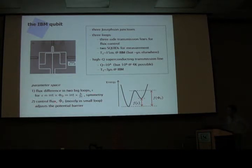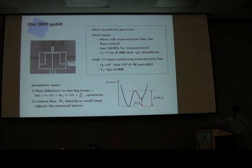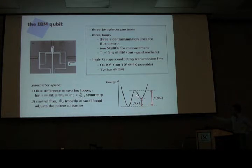The second parameter is the control flux, which mostly corresponds to the flux penetrating the small loop on top, with a small correction from the sum of the flux in the other two loops. Physically, changing the control flux adjusts a potential barrier. If the bias is zero or an integer multiple of phi-naught, the two lowest energy levels are degenerate. If the control flux is very small the barrier is large; as you increase it, the barrier comes down and rapidly vanishes.